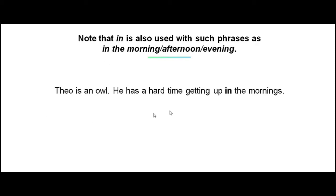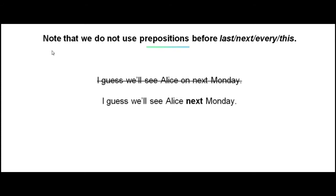Have a look at the example: Theo is an owl. He has a hard time getting up in the morning. Also note that we do not use prepositions before: last, next, every, or this.